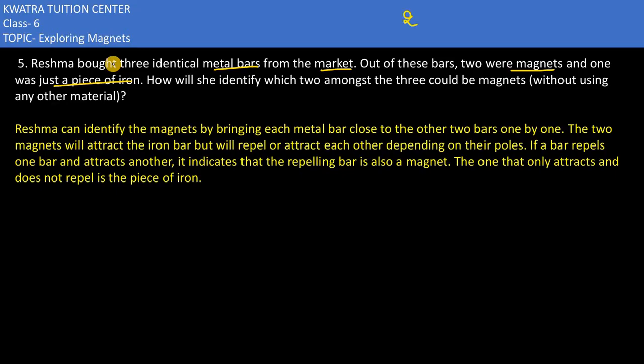Two bars were magnets and one was a piece of iron. They are saying how will she identify which two amongst the three could be magnets. Which one could be magnets in this? So what can she do?